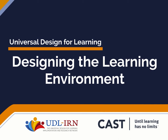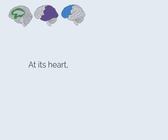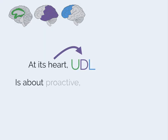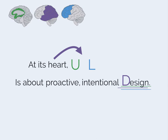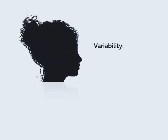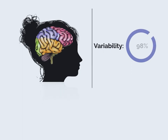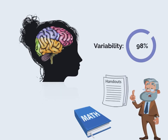Designing the Learning Environment. At its heart, universal design for learning is about proactive, intentional design. Because we know from brain research that all students learn differently, using traditional one-size-fits-all materials, while well-meaning, puts many students at great disadvantage.